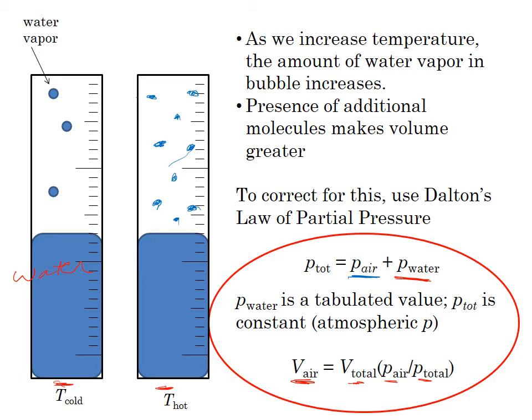So if you think about this, if the partial pressure of water, the vapor pressure of water were really low, P air would be approximately equal to P total. If P air is approximately equal to P total, this ratio would be one.